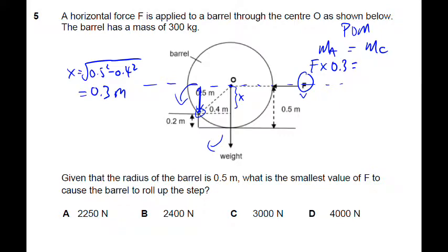And for the weight, take note W equals to mg. You are given the mass of the barrel. So you take 300 kg times 10 and that will be 3000 newton.